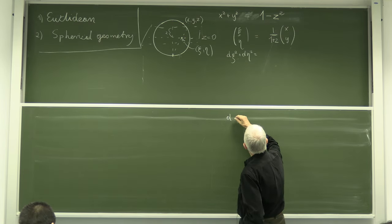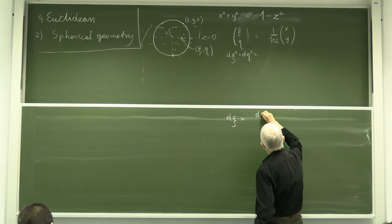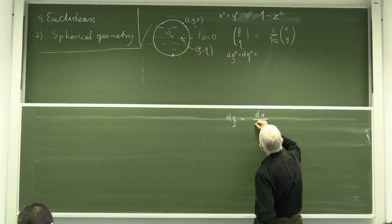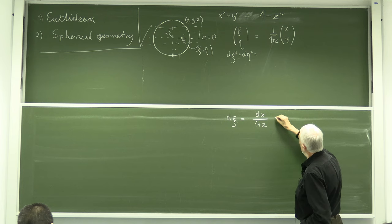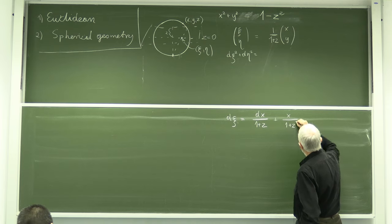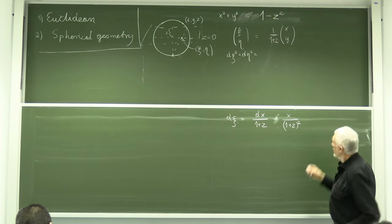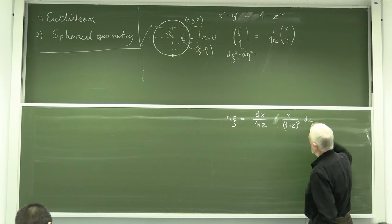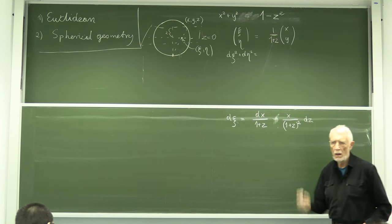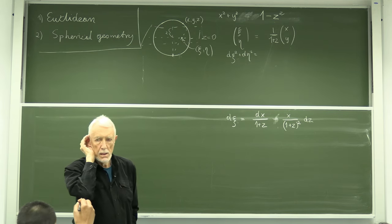Beginning with dξ = dx/(1+z) + x · d(1/(1+z)), we differentiate the projection formula. The student asks to clarify the theta and eta notation on the diagram.